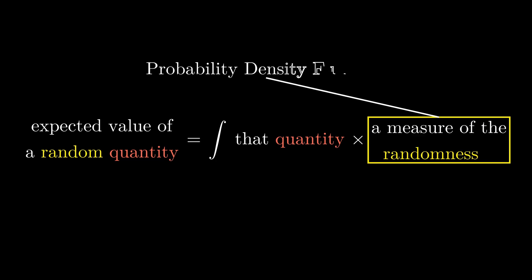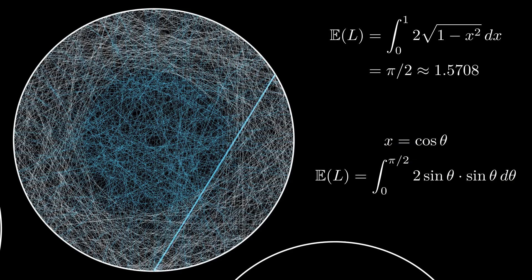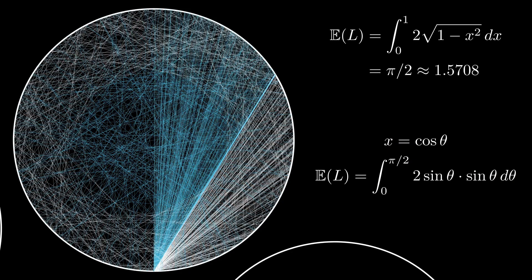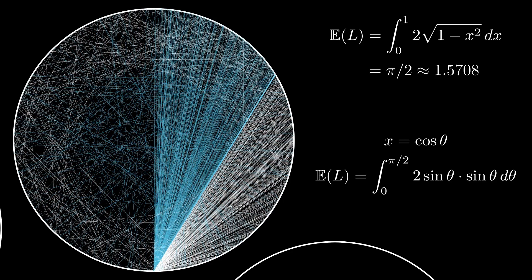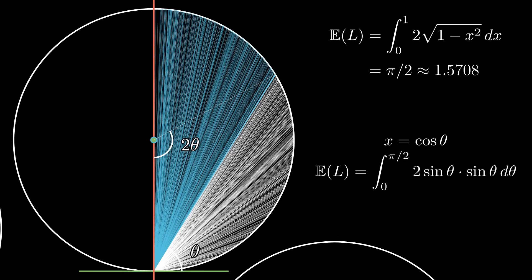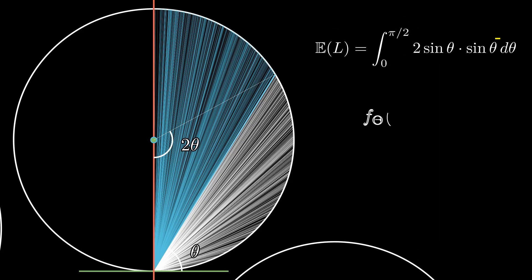This randomness measure is what we call the probability density function of the random variable. We know that 2 sin θ is the length of the chord. If we interpret θ as the angle between the chord and a tangent at its endpoint, then whatever remains must be the density function of the random variable θ. Let's make a note of this as we will be revisiting it later. This density function in this case is sin θ.